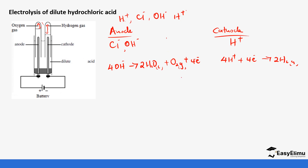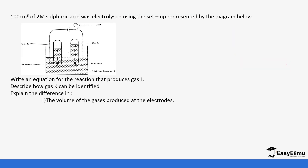Let's do one question to conclude the session. 100 cm³ of 2 molar sulfuric acid was electrolyzed using the setup presented in the diagram. Write an equation for the reaction that produces gas L, describe how gas K can be identified, and explain the difference in the volume of gases produced at the electrodes. We can start with the ions in solution: hydrogen ions, hydroxyl ions, and sulfate ions.